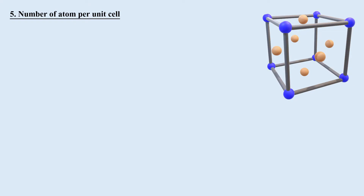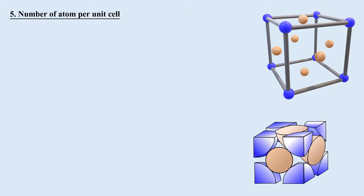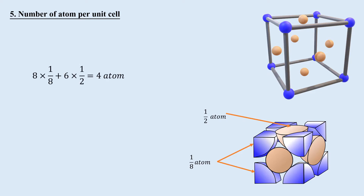Number of atoms per unit cell: What is the total portion of atoms inside a face-centered cubic unit cell? The FCC unit cell is made up of 14 atoms — 8 at the 8 corners and 6 at the center of the 6 faces. The corner atoms each contribute 1/8 inside the cell, and the face-centered atoms each contribute 1/2 inside. Therefore, in FCC: 8 × (1/8) + 6 × (1/2) = 1 + 3 = 4 atoms per unit cell.